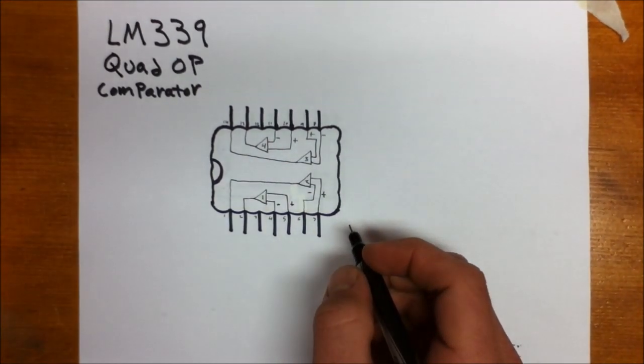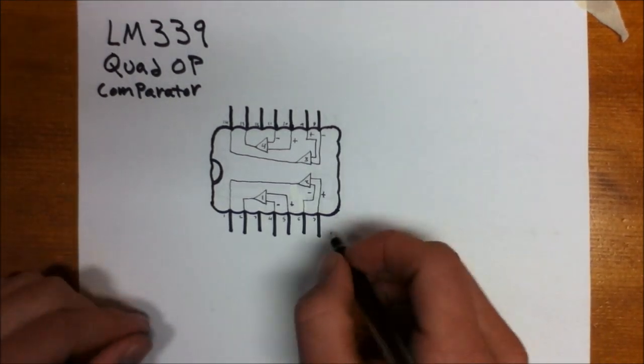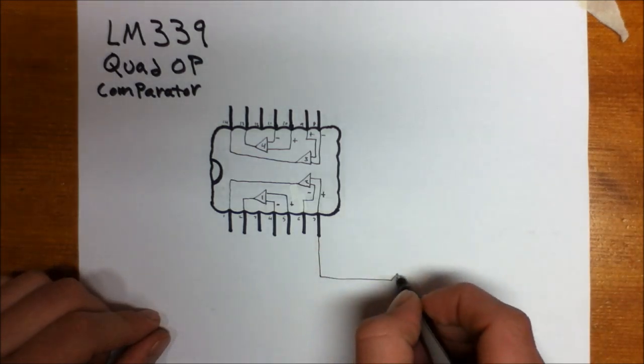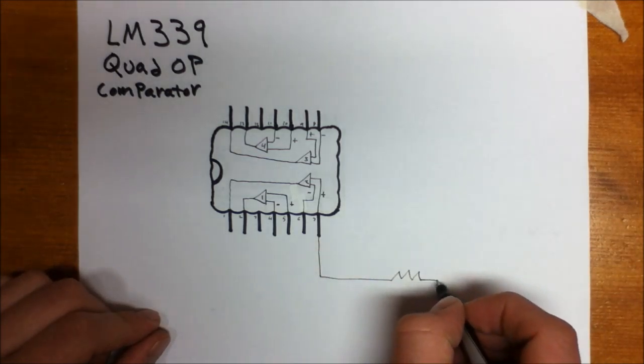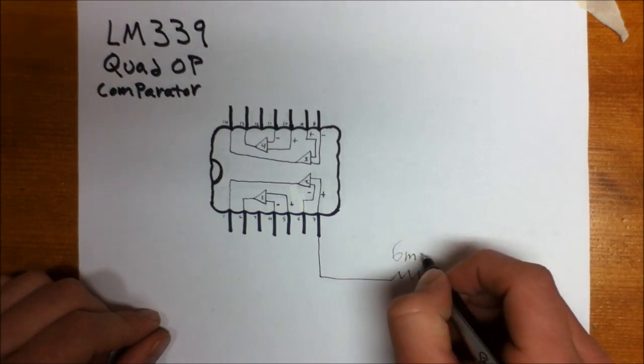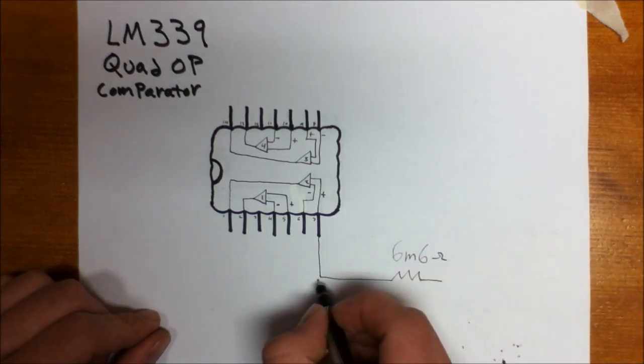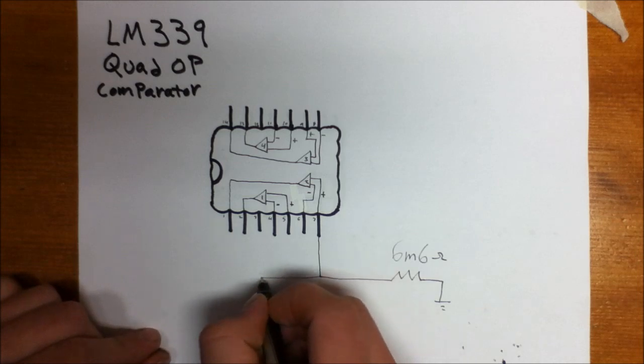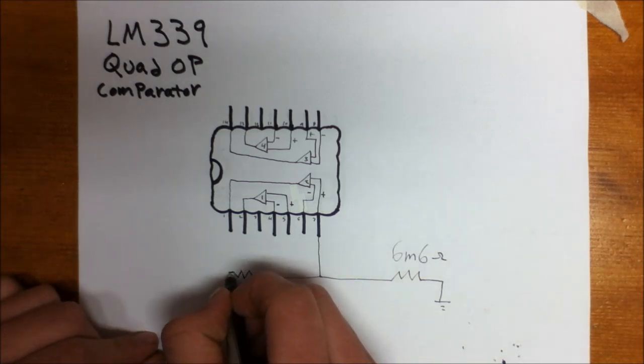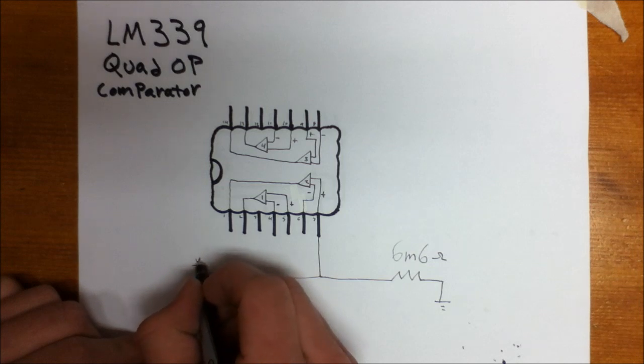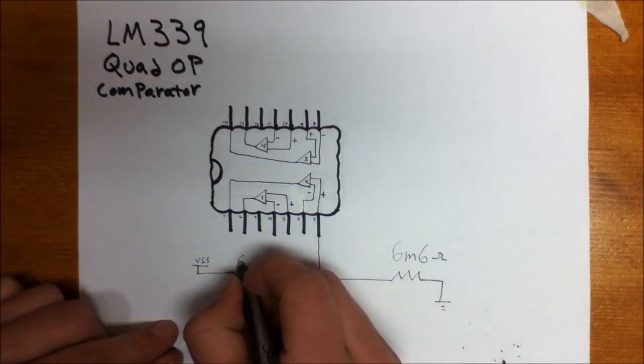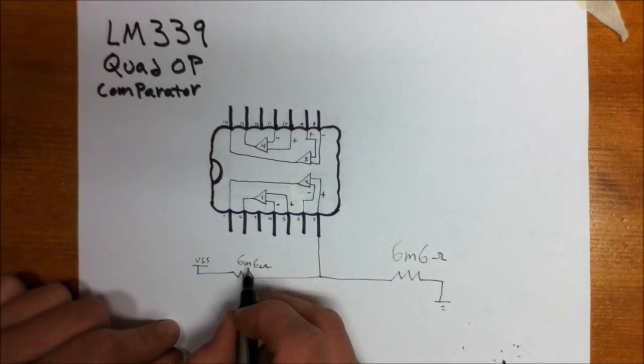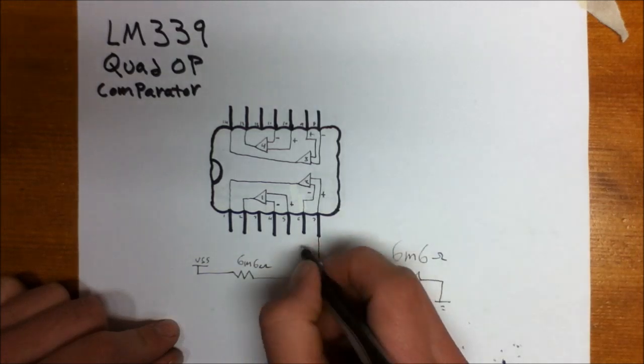And since we're measuring resistance, on this leg we're going to put a 6.6 megaohm resistor and we're going to tie this to ground. On the other side, we will put another 6.6 megaohm resistor and tie that to our source. So that completes the one half of the comparator.